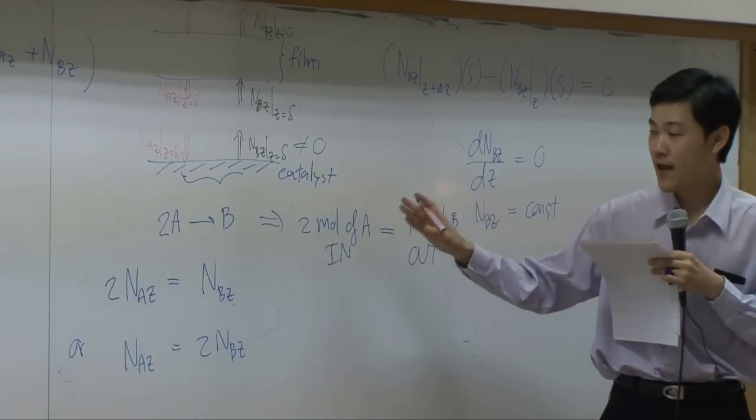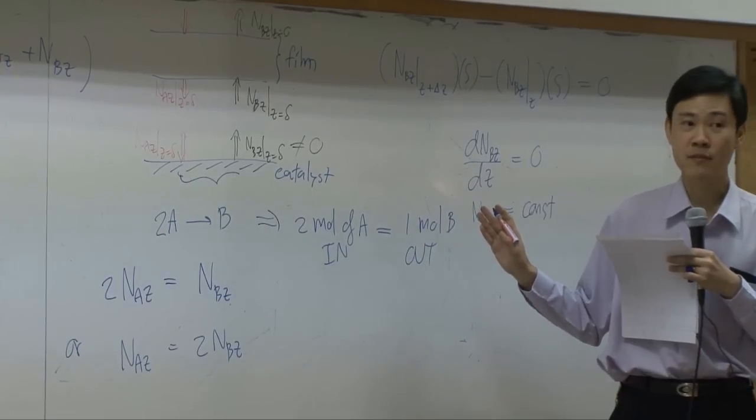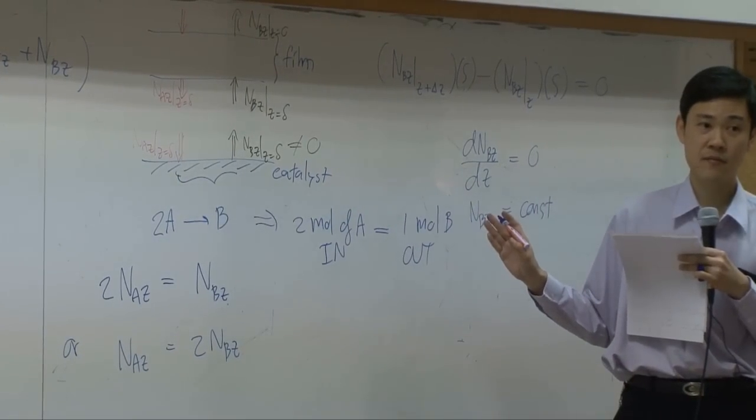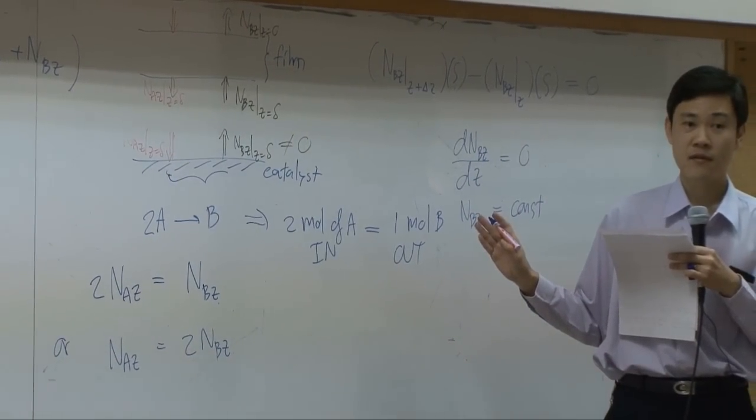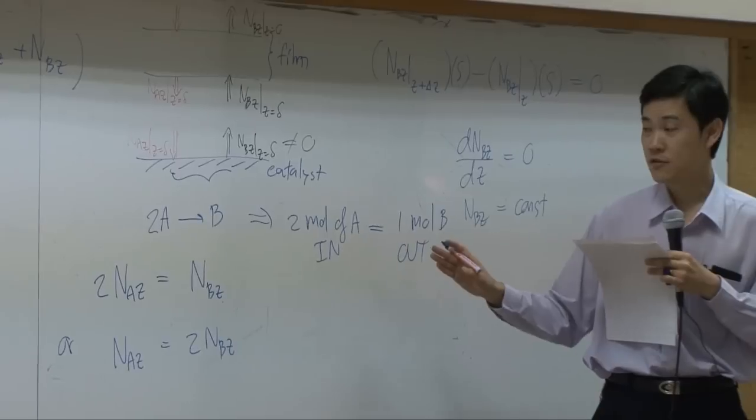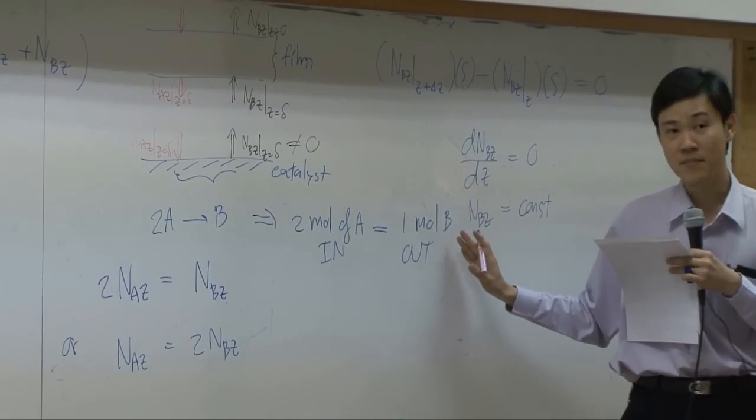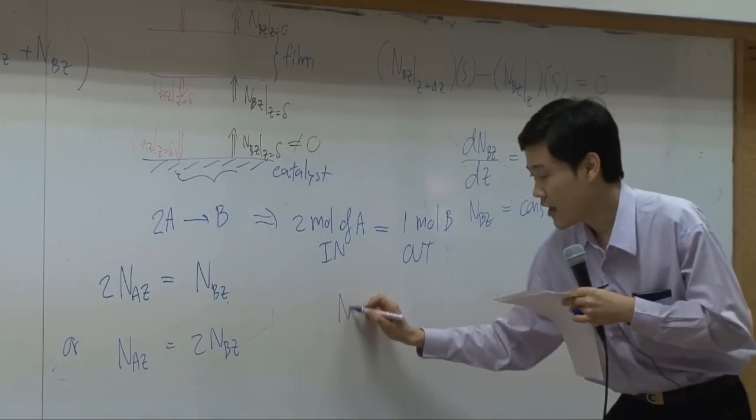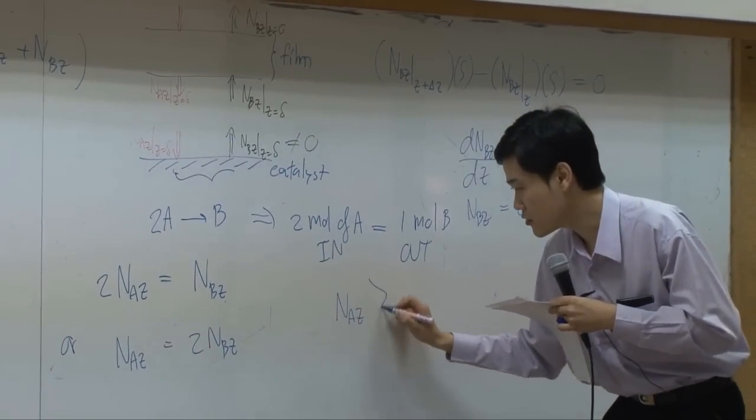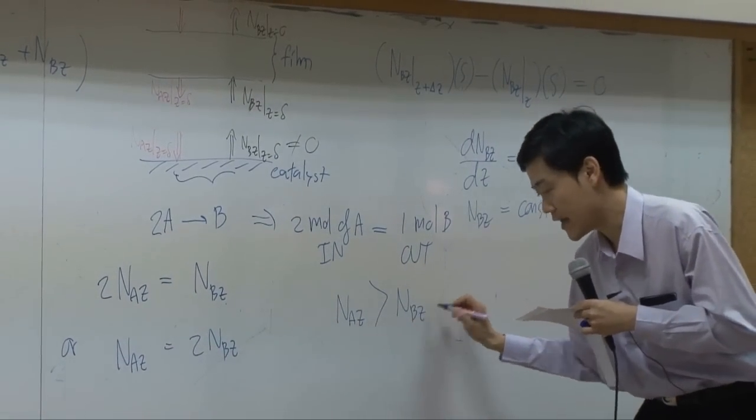So flux of A or B, which one is supposed to be higher? Flux of A, right? You're supposed to supply more A to get B out. That means N_A supposed to be greater than N_B.